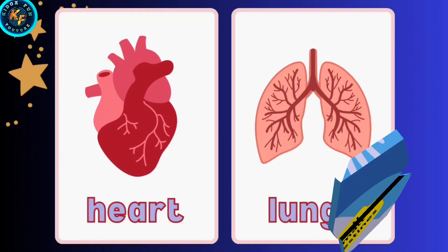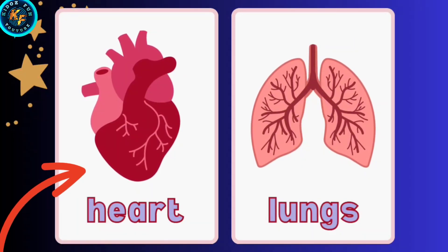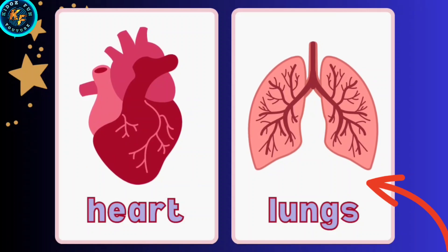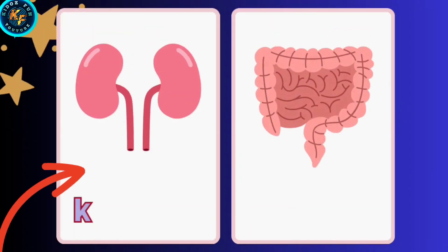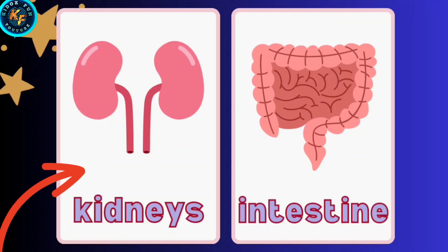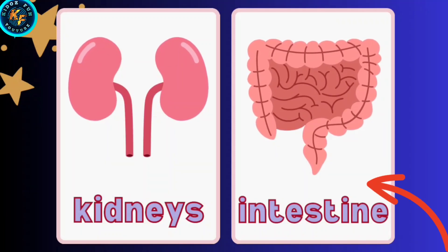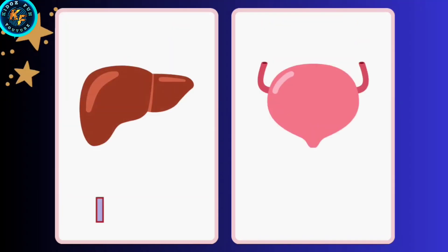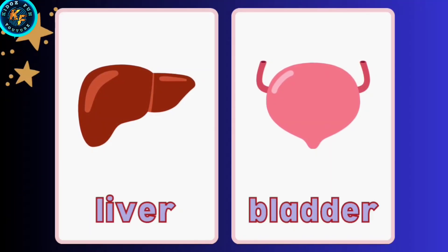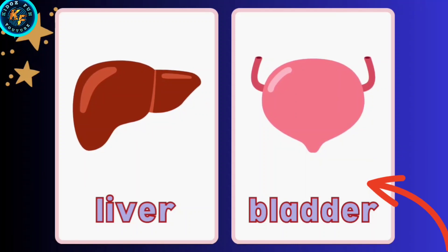This is Heart. These are Lungs. These are Kidneys. This is Intestine. This is Liver. This is Bladder.